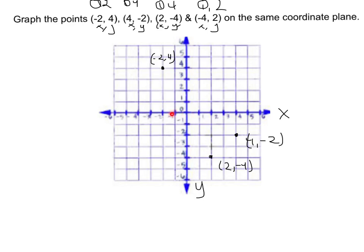And then the last point, left 4, and sorry, left 4 and up 2. And there you have those points graphed on the coordinate plane.